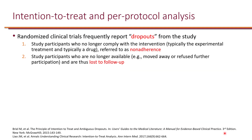When clinical trials report dropouts, they are typically due to two reasons: either non-adherence — for example, the patient is no longer taking the intervention — or loss to follow-up, for example, either the patient moved away or something happened to the patient so we couldn't follow up with them.